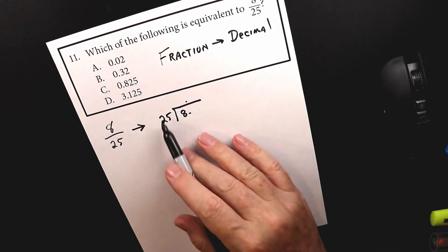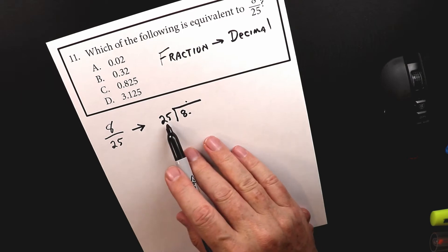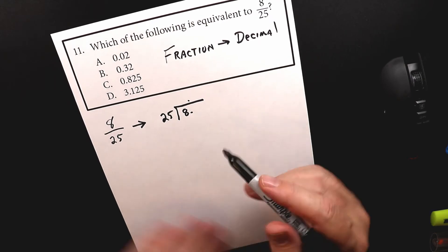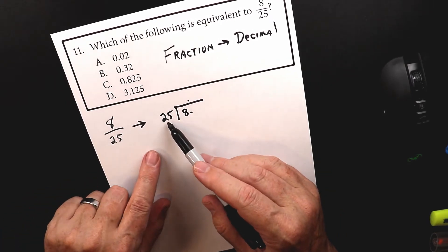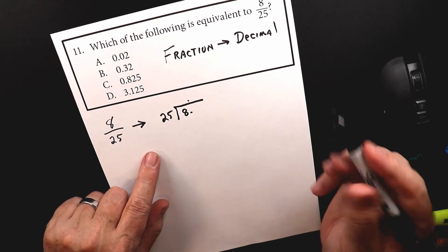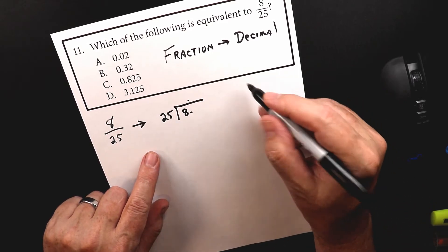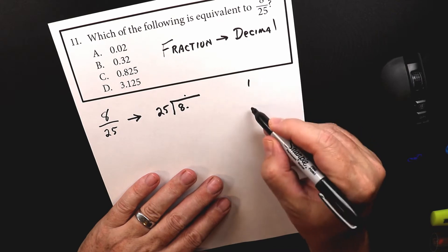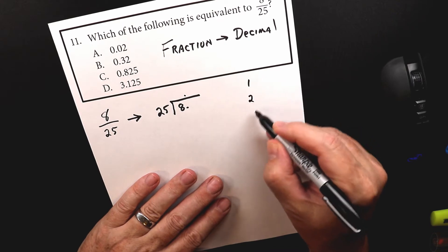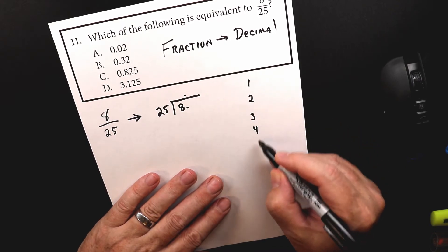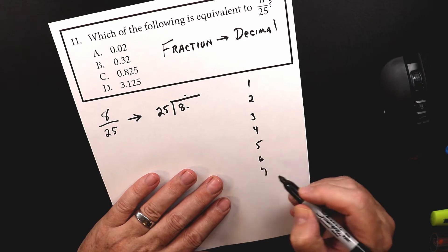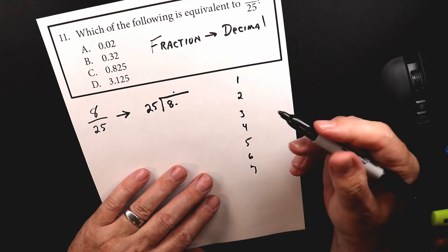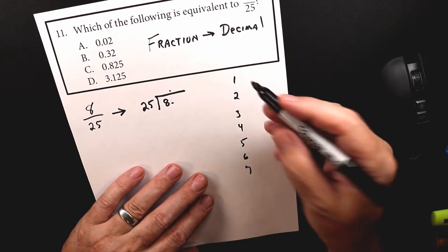Now we're dealing with the 25 times tables. You might think that's hard, until I tell you that you know there are 25 cents in a quarter. So let's just do a couple of these: one, two, three, four, five, six, seven — that's more than I think we're going to need, but what the heck.